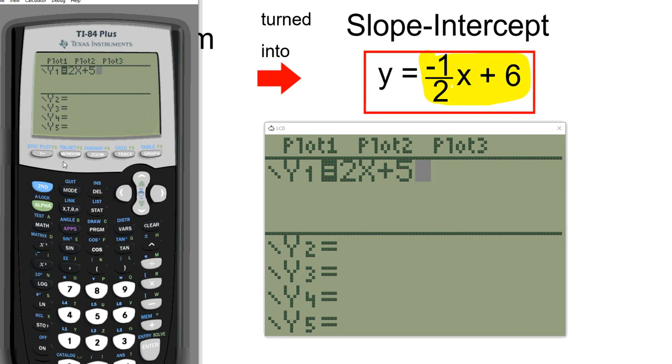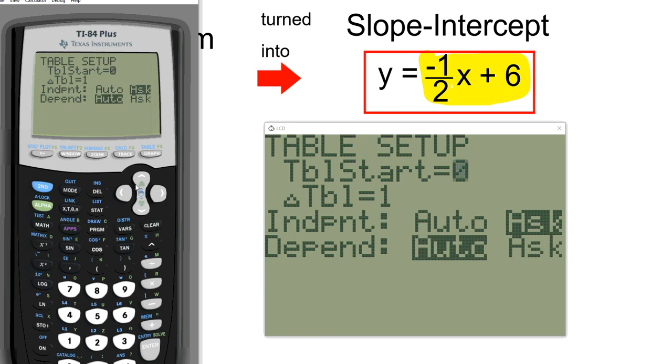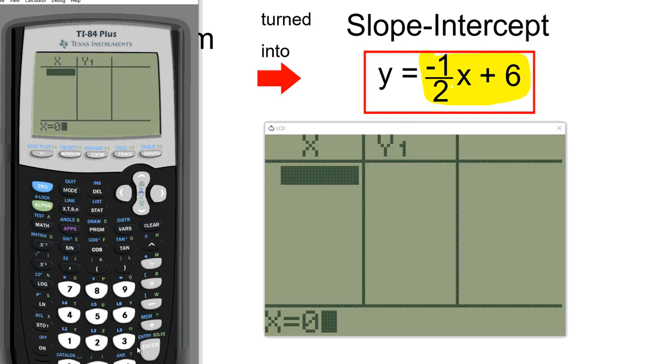Now, the next thing is, is always check your table setup. So hit blue, or second, and window. Make sure that it's always on ask for independent. If it's not, you just scroll down and click on ask. And now you go straight over to your graph right there, and you can type in anything you want.